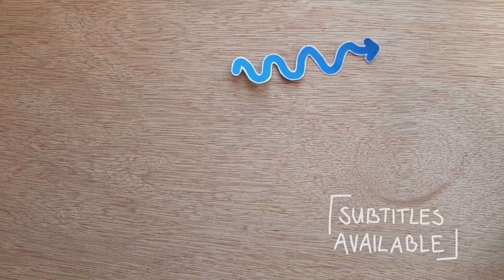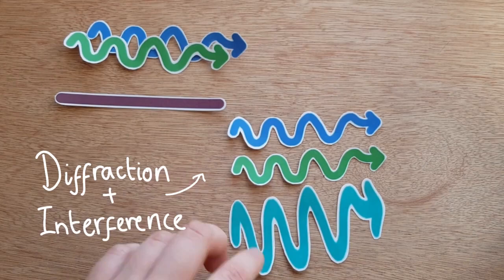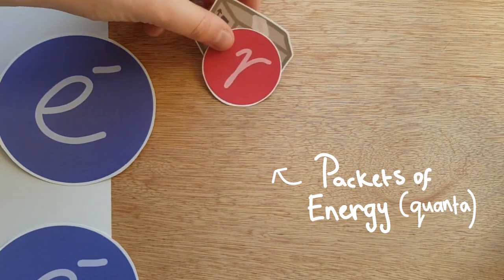Most people have heard of the wave-particle duality of light. Light sometimes diffracts and interferes with itself, a behavior of waves, but sometimes seems to be made of packets of energy or photons, acting like a particle.